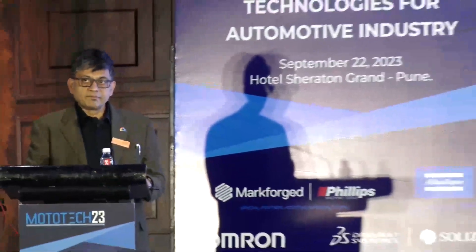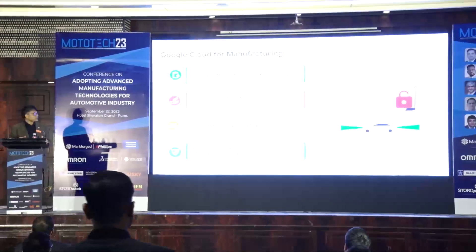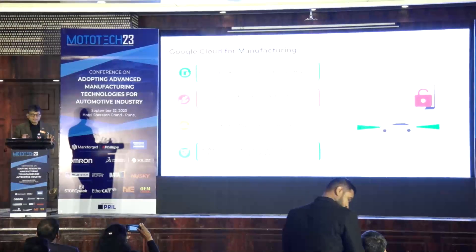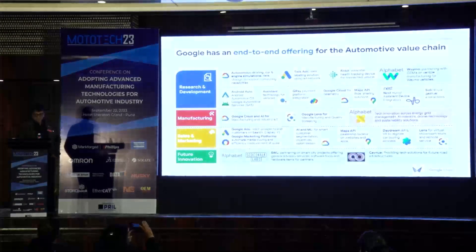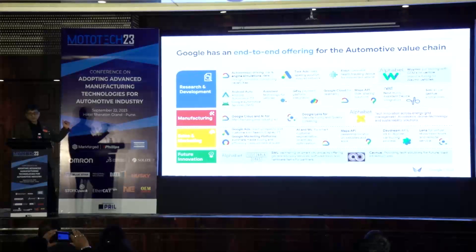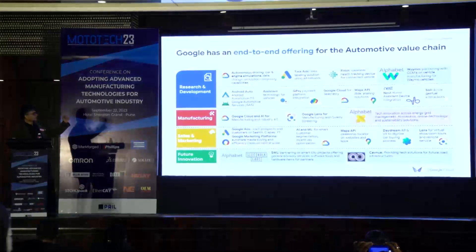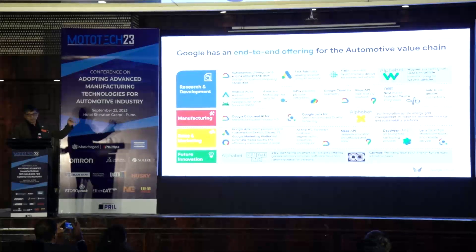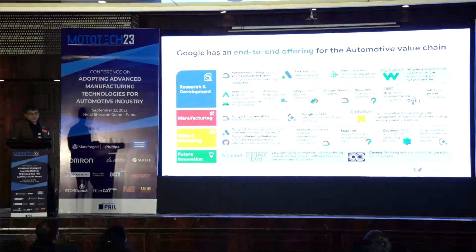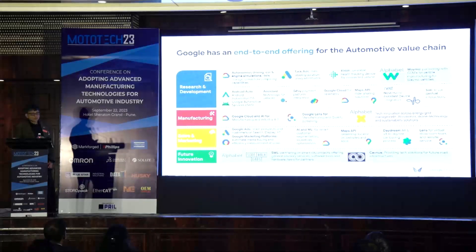Google Cloud is the part of Google I represent. You know the company from Google Search, Gmail, and so on — that is from the Google stable. Google is also part of Alphabet, which is the holding company. Alphabet's end-to-end offering for the automotive industry starts with research and development. There is Waymo, the autonomous driving car — a self-driving car already available as a taxi in San Francisco that you can hail. That is from Alphabet.